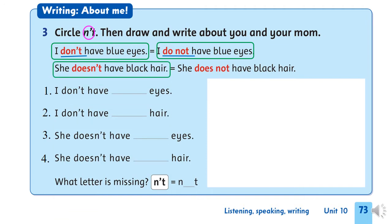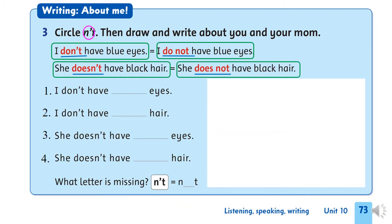Next: She doesn't have black hair. Doesn't — the long form is 'does not'. So we say the sentence with the long form: She does not have black hair. Okay everyone, first you have to circle 'don't' and 'doesn't' in these sentences.